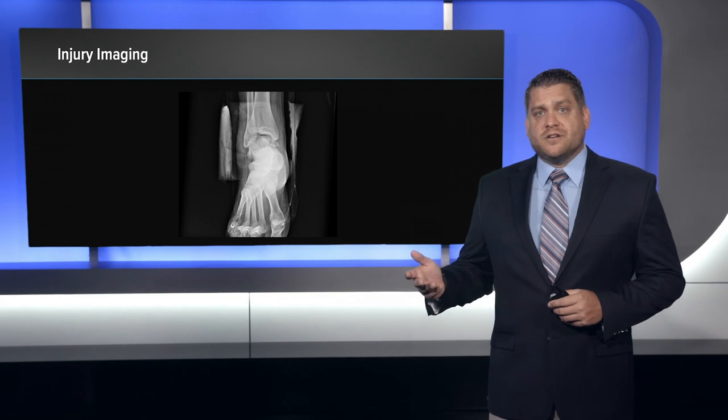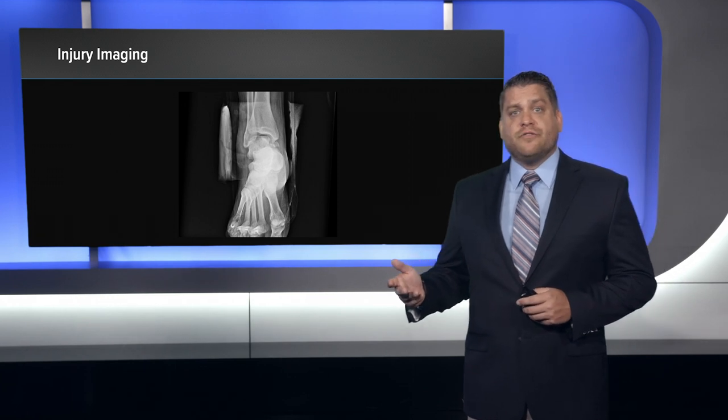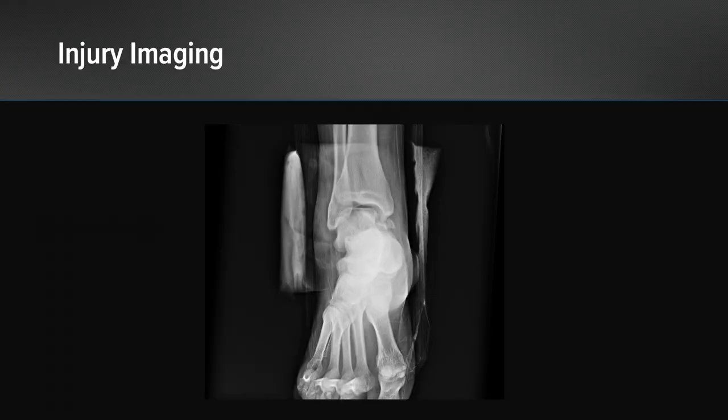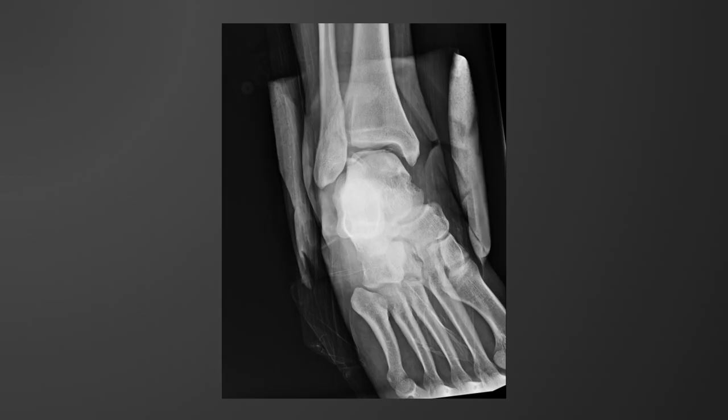These are his initial plain film images. We can see on the talus dome some evidence of a fracture. The mortise view again shows the same fracture of the talar dome.